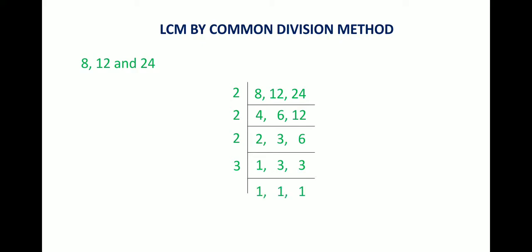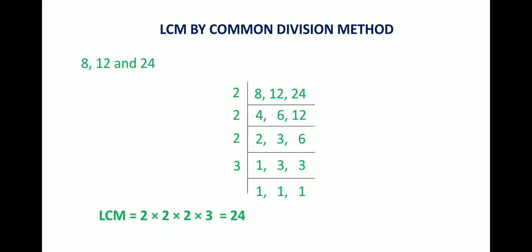3 cannot divide 1, so 1 comes down as it is. 3 divides 3 one time, and 3 divides 3 once more giving 1. So the divisors collected are 2, 2, 2, and 3. Therefore the LCM is equal to 2 into 2 into 2 into 3, which equals 24, and 24 is the required answer.